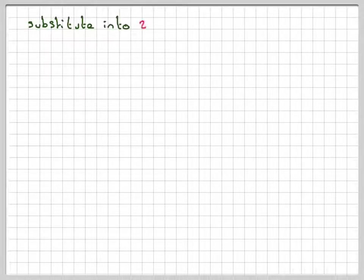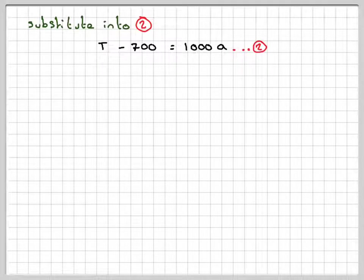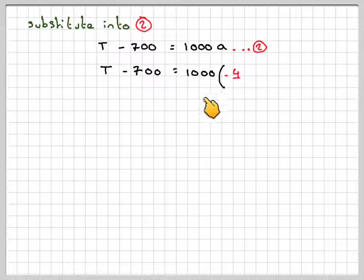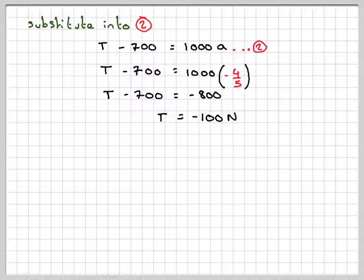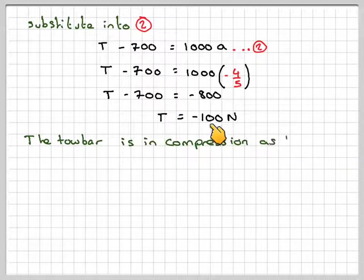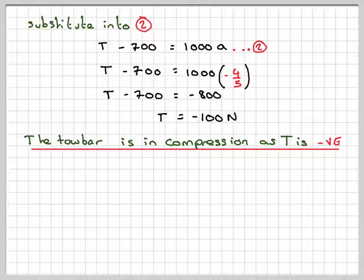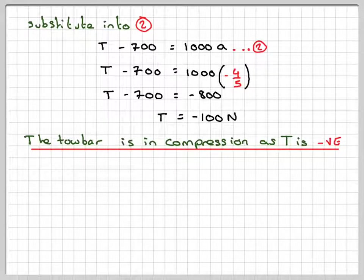Substituting back into equation 2: T minus 700 equals 1,000 times minus 4/5, so T minus 700 equals minus 800, therefore T equals minus 100 newtons. Since the tension is negative, the tow bar is now in compression. The force is acting in the opposite direction — positive tension means tension, negative means compression.